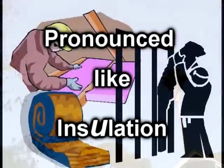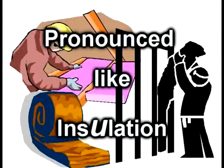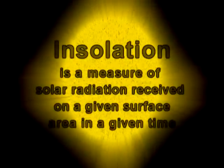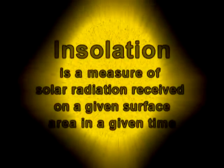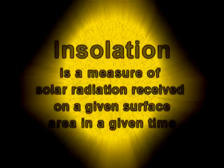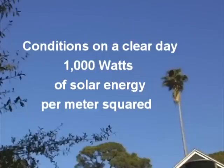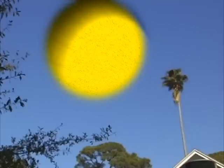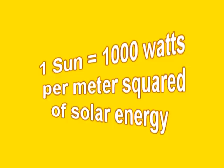Insolation — pronounced the same as the Owens Corning insulation — is the measure of solar radiation received on a given surface area at a given time. Conditions on a clear day are assumed to be a thousand watts of solar energy. After all the losses through the air, at the earth's surface we call it one sun. It's just a standard: one sun equals a thousand watts per meter squared.